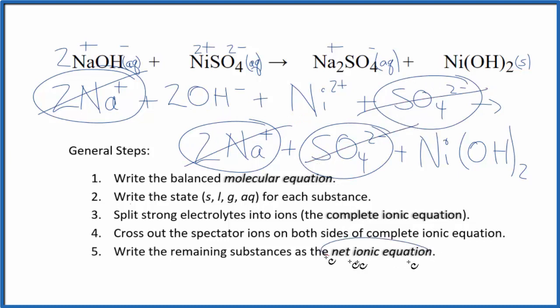Looks like we have a sulfate ion here and then again in the products. And what's left, that's the net ionic equation for NaOH plus NiSO4. I'll clean it up, add the states in, we'll have our net ionic equation.